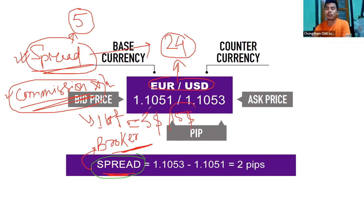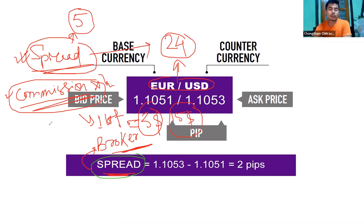Some brokers charge a fixed rate commission per lot, while others use a higher spread instead. Depending on the broker, the spread can vary — high spread or low spread. This can cause confusion when choosing a broker.